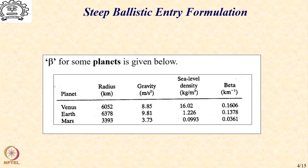So, for example, Venus the value is 0.1606, for Earth it is 0.1378 and for Mars it is 0.0361. That indicates also the kind of atmosphere which is present on these planets.